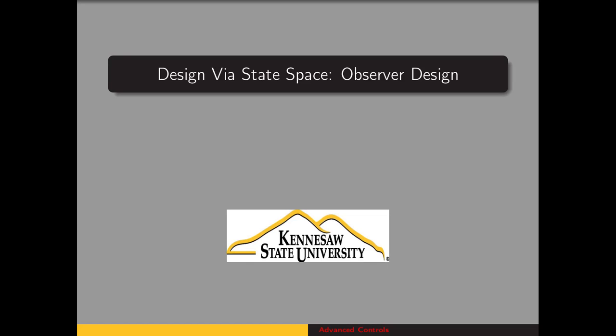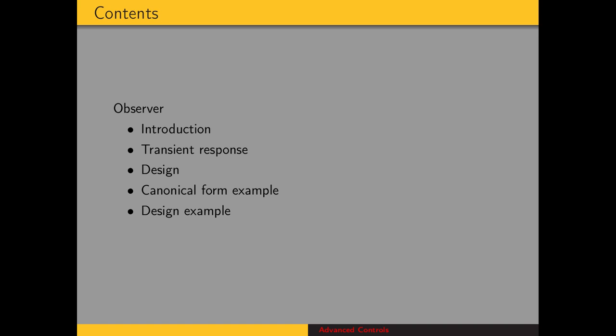We're going to take a look at an observer or estimator of the state vector. We'll start off with an introduction of the concept of an observer or estimator, then take a look at why the transient response matters. We'll go over the process for designing an observer, and then examine a different state space representation called the observer canonical form. We'll work through one example of the observer canonical form, representing a system in that form, and then conclude with an example of designing an observer.